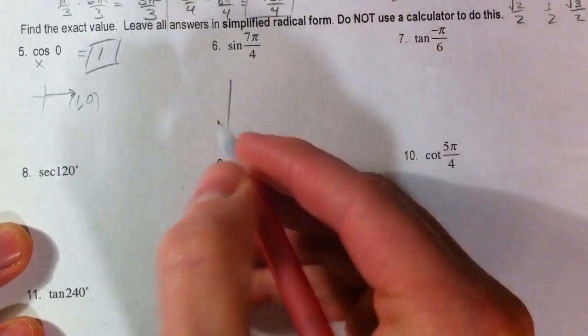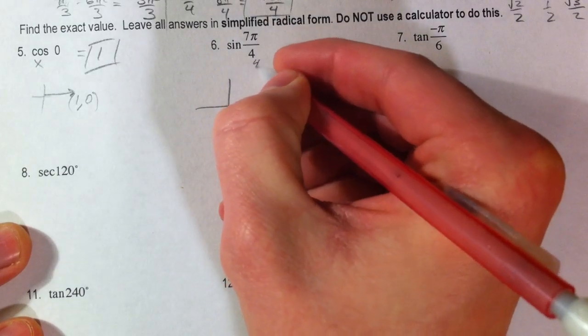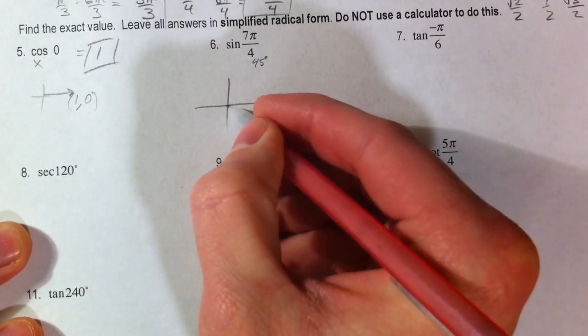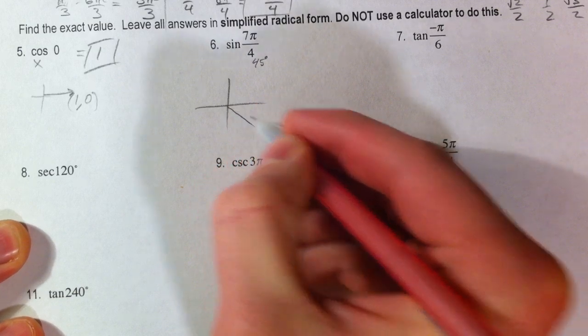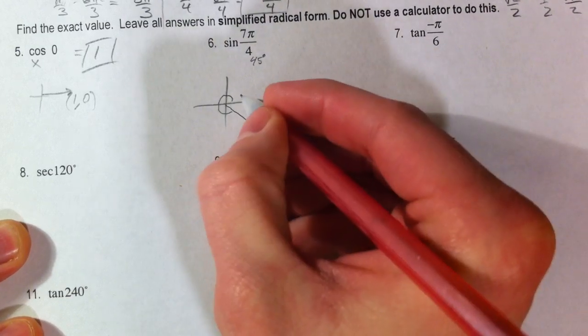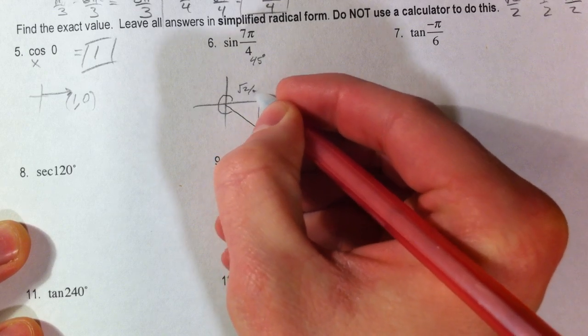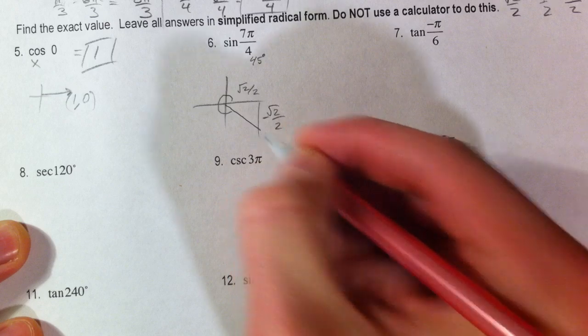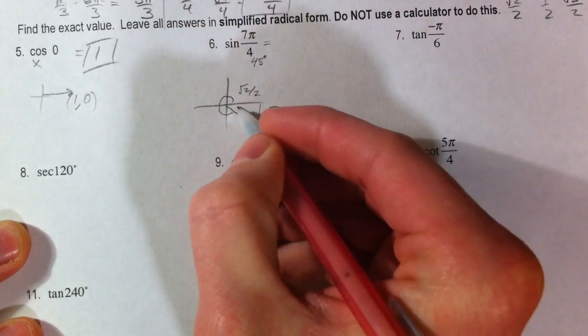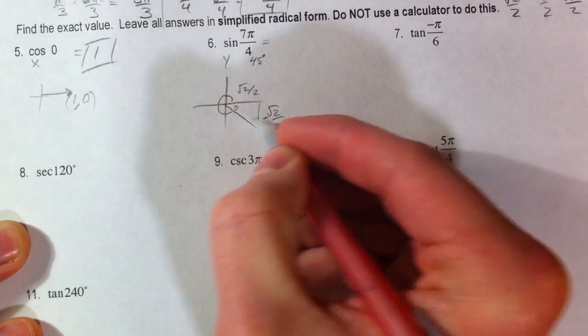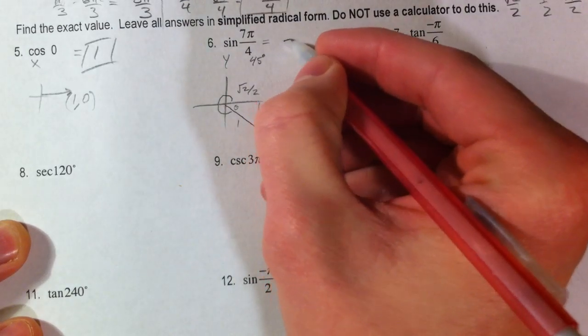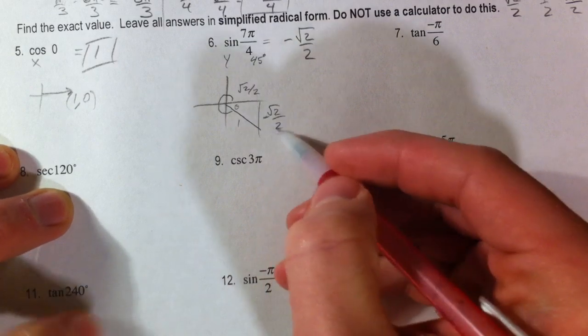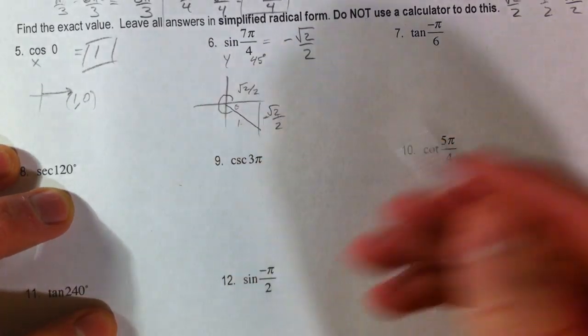Sine of 7π over 4. Over 4, you should think 45 degree angle. And we have 7 of them. So, we're almost all the way around to 8π over 4. And so, we can label that with our root 2 over 2s. And the y value is going to be negative because it's gone down. For the sine, we're looking for the opposite or the y value. And so, this is just going to be negative root 2 over 2, just the y value because of the opposite over the hypotenuse. The hypotenuse is 1.